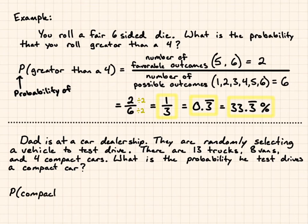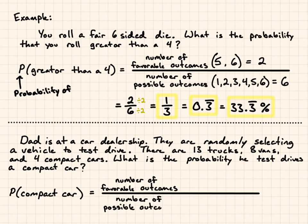The probability of a compact car is the number of favorable outcomes, so that would be the number of compact cars, divided by the number of possible outcomes. If they're choosing these vehicles at random, there's 13 plus 8 plus 4 possible vehicles to choose from. On the top, we have 4 compact cars, and on the bottom, we have 13 plus 8 plus 4, because that's the total number of possible vehicles. You end up with 4 over 25, because 13 plus 8 is 21, plus 4 is 25. So, 4 over 25 is your fraction. You can also change those into decimals or percents.